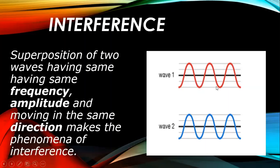The second condition is amplitude — both waves must have the same amplitude. Amplitude is the distance from the baseline to the maximum point of the wave. For example, if the amplitude is 2 cm for wave one, wave two must also be 2 cm.